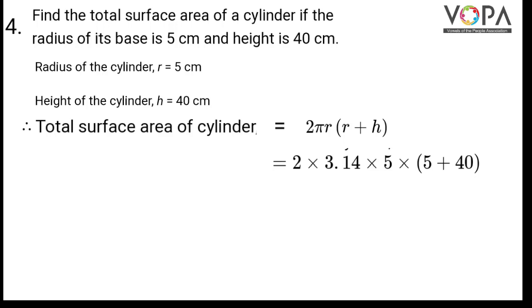Substituting the values we have 2 × 3.14 × 5 × (5 + 40). So 5 plus 40. So we have 2 × 3.14 × 5 × 45. And the multiplication gives you 1413 cm².